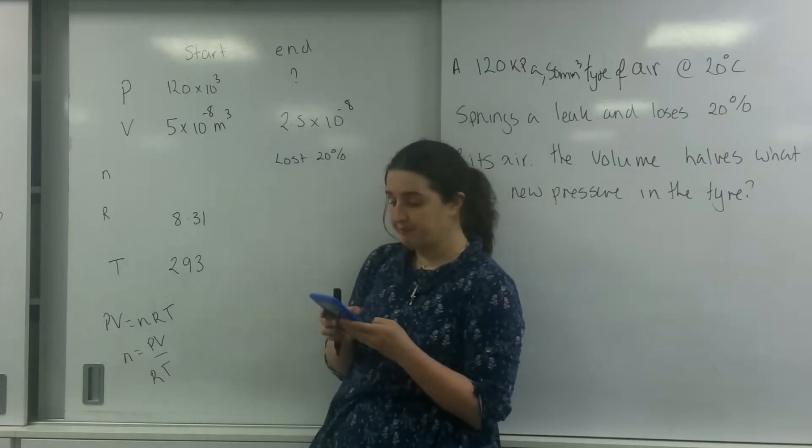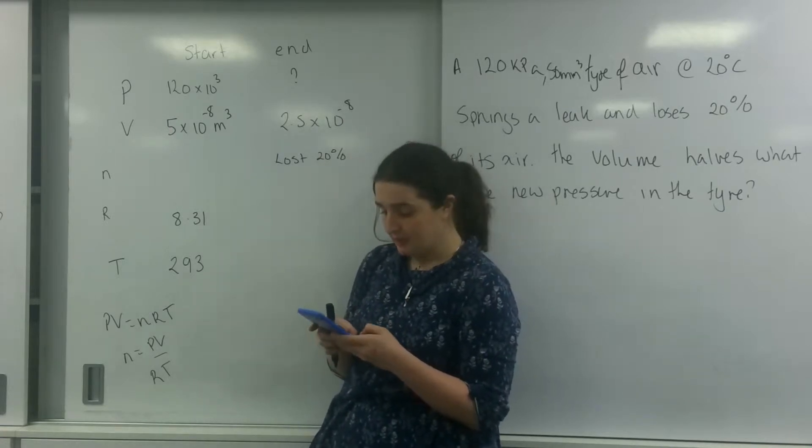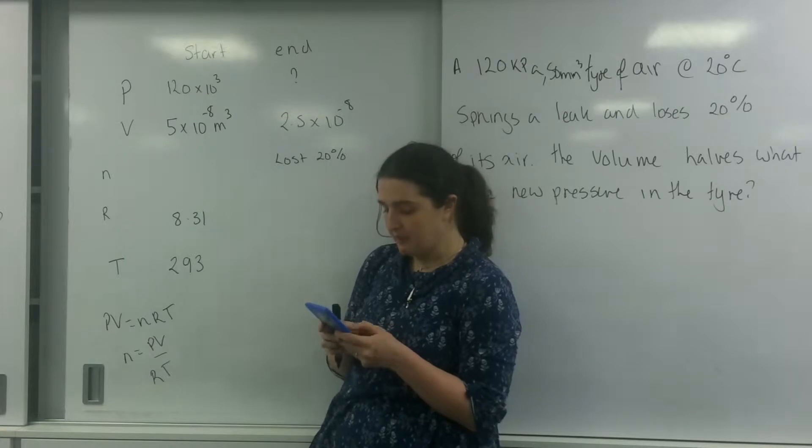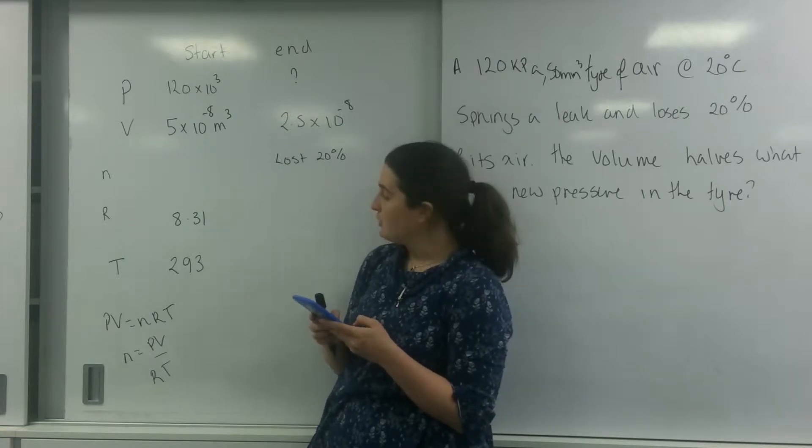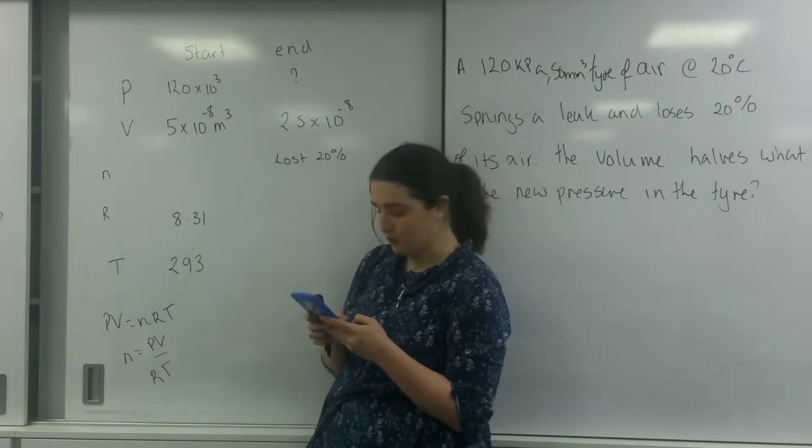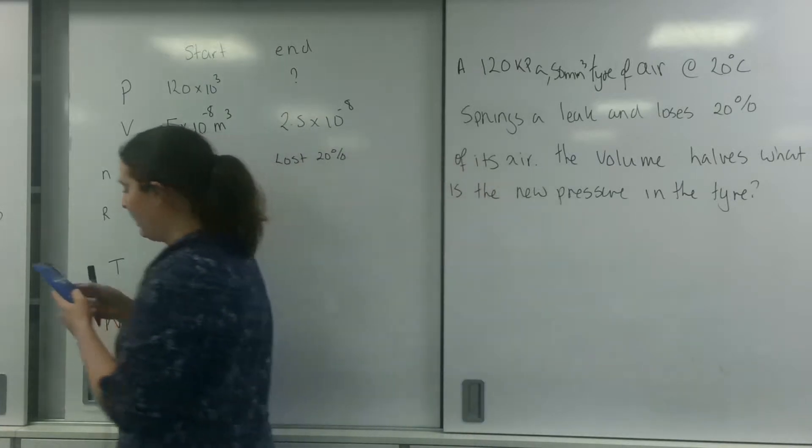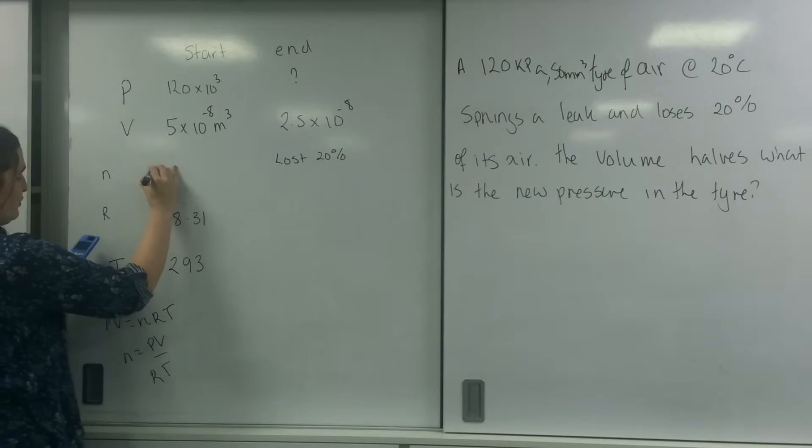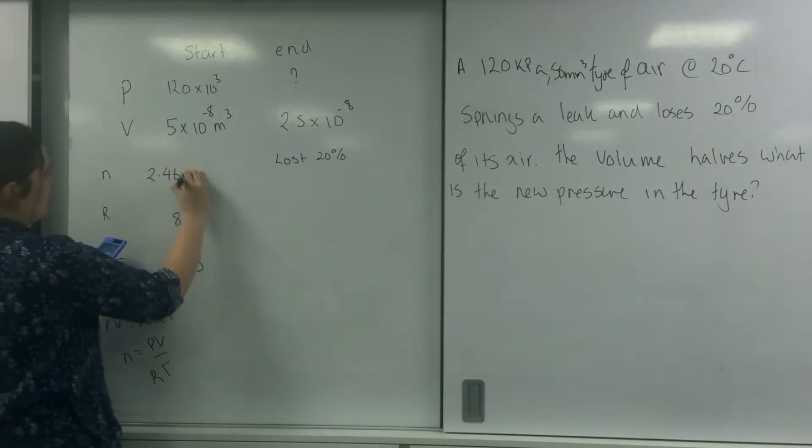I've got 120 times 10 to the 3 times my 5 times 10 to the minus 8. I'm going to divide that by 8.31 and 293. And I get an answer of 2.46 times 10 to the minus 6 moles.